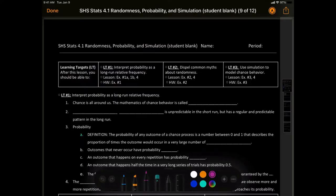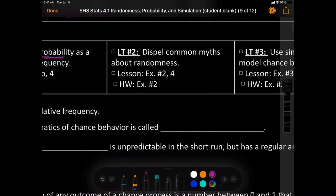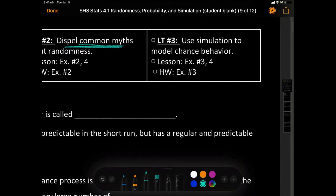Let's go over stats lesson 4.1, randomness, probability, and simulation. What's our learning target? Learning target number one, we're going to interpret what probability is as a long-term relative frequency. Number two, we're going to dispel some common myths, some lies about randomness. And number three, we're going to use, again, your favorite part of math, simulation or technology, to help us model chance behavior.